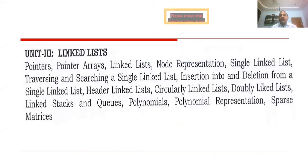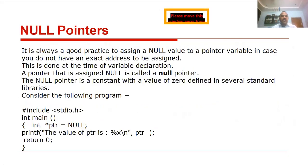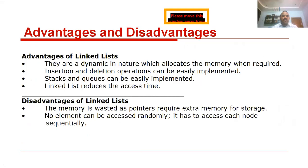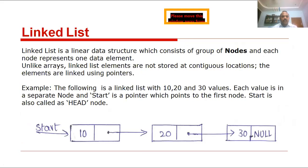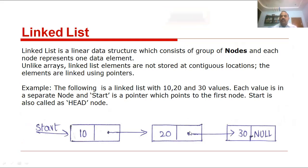Today we want to learn circular linked list. Before going to learn circular linked list, this is called a linked list. These are the nodes. In the single linked list each node has two parts: the first one is the data part and the last one is the next, which holds the address of another node. That is called the next part.